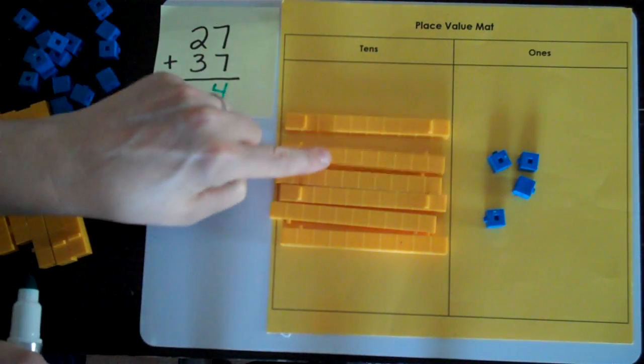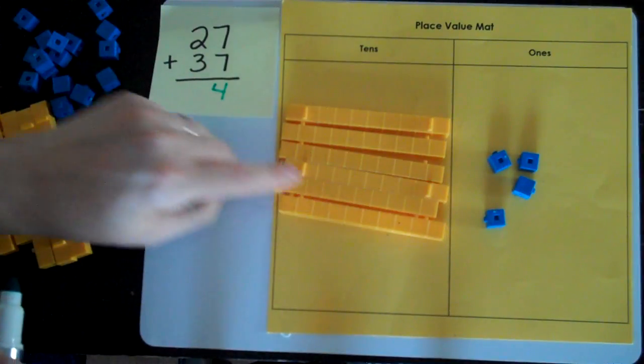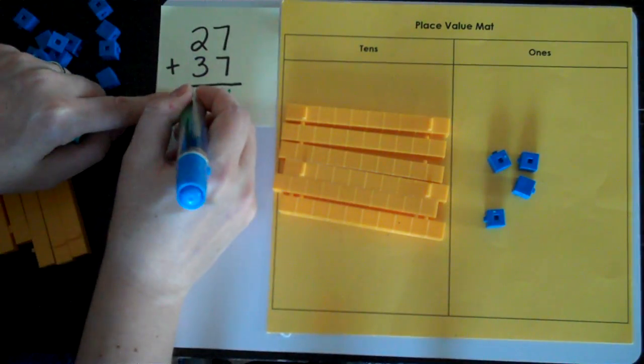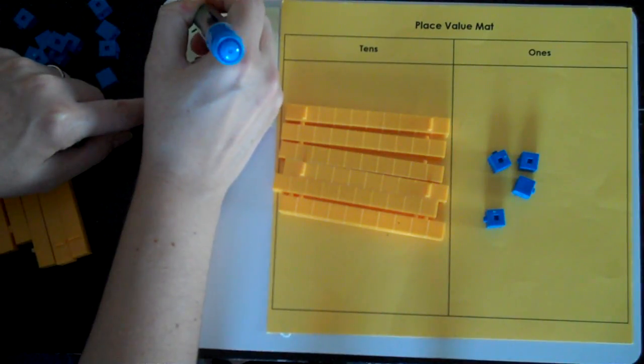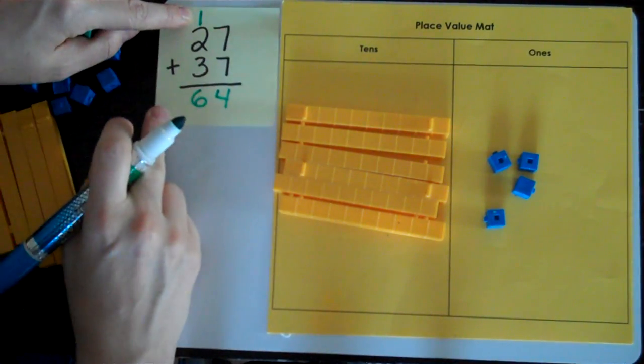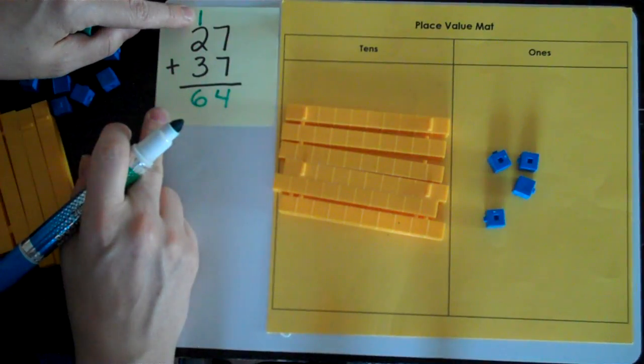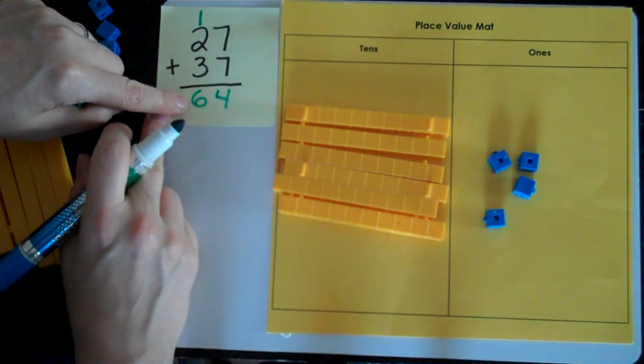I have one, two, three, four, five, six tens. And because I traded, I can show that I traded and added one to the tens place by putting it up there. And that's a way to show that we did our trading in our algorithm. 64 is the answer I got.